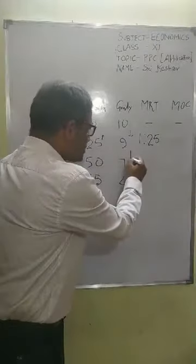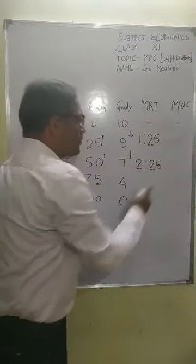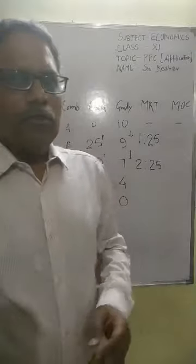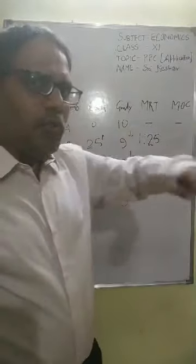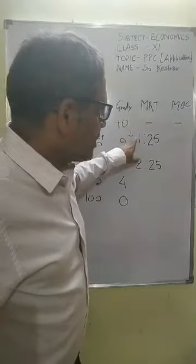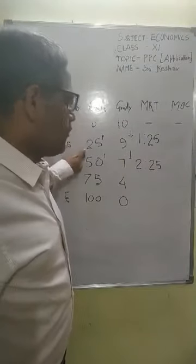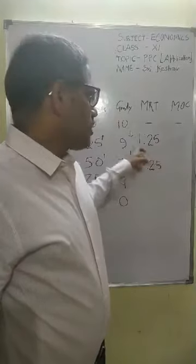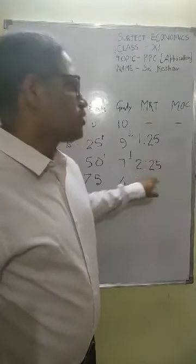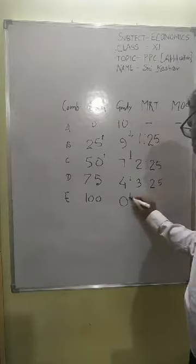Similarly, the next step: sacrifice is 2 units and gain remains 25, so 2 is to 25. Every time you write sacrifice in the numerator and gain in the denominator. From 10 to 9 in Y, that is a decrease by 1 unit — the sacrifice. From 0 to 25 in X, that is the gain. So the ratio is 1 is to 25, then 2 is to 25, then 3 is to 25, and 4 is to 25.